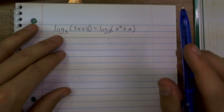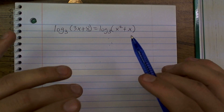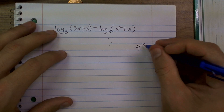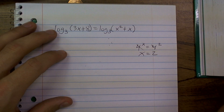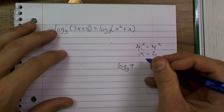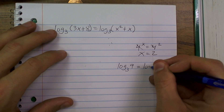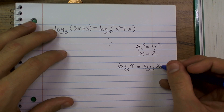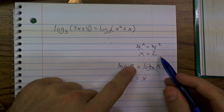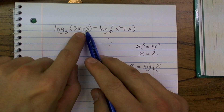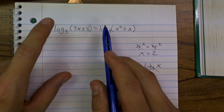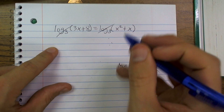One thing that's really powerful about logarithms is — we talked about if I have 4 to the x equals 4 squared, then x has to equal 2. Well, if I know that log base 3 of 9 equals 2, and log base 3 raised to x — then x has to equal 9. It's the same thinking here with logarithms. I don't know what 3x plus 8 or x squared plus x equals, but since I have a log of the same base, these two have to be equal to each other, and I can just get rid of my two logarithms.